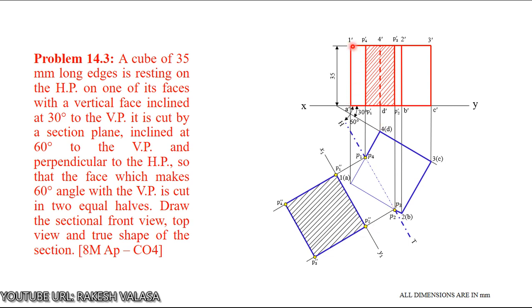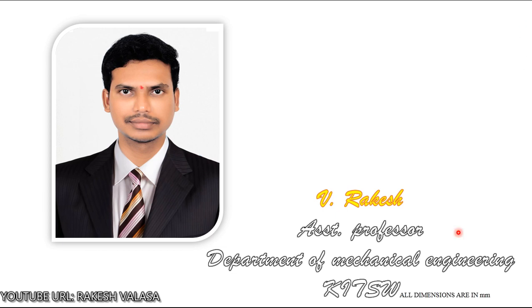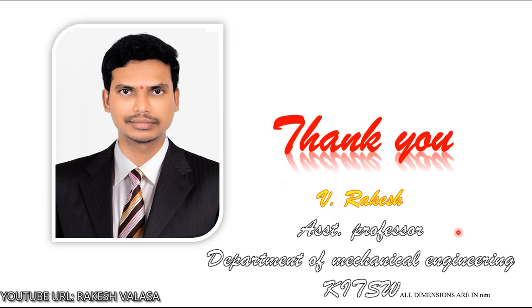This is the sectional front view, this is the sectional top view, and this is the true shape for the given problem. The important condition here is: the face which makes 60 degrees angle with the VP is cut into equal arms. If this condition is not given, you can take any point on the AD face. If the condition is given, you can take the midpoint of the AD or BC face. I hope this problem is very clear to everyone. Thank you for watching, please do like and subscribe to my channel for more updates and share with your friends.